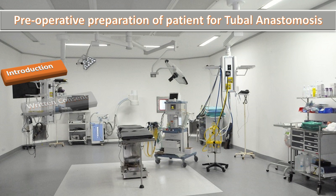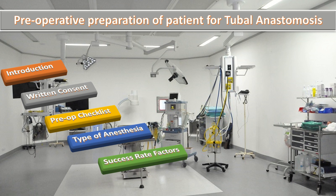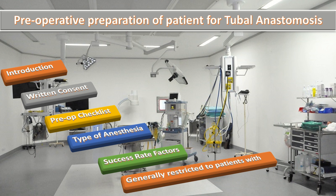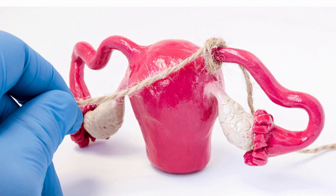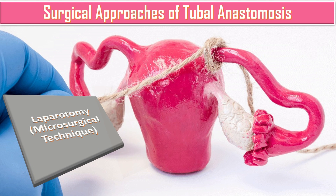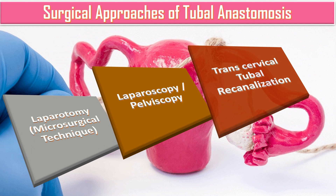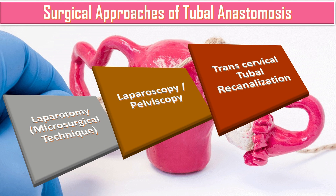Regarding pre-operative preparation of the patient for tubal anastomosis: the first important step is patient introduction, secondly written consent, thirdly the pre-operative checklist, the type of anesthesia, and discussing success rate factors such as age. This procedure is generally restricted to patients with no other cause of subfertility.